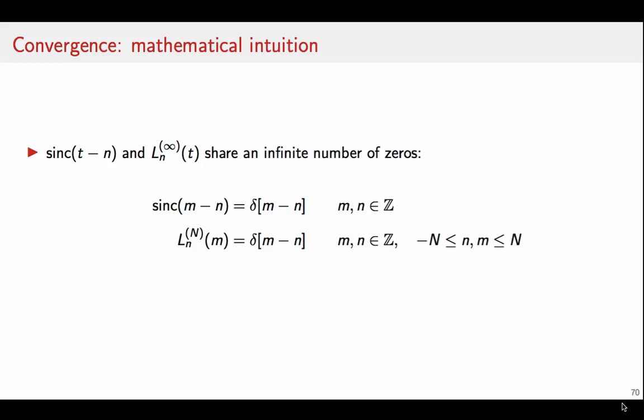One very non-rigorous way to develop a mathematical intuition as to why this is plausible is the fact that sinc(t-n) and the infinite-degree Lagrange polynomial share an infinite number of zeros because they're both equal to zero for all integer values of the argument. Since polynomials that share the same zeros are identical, by some sort of a hand-wavy extrapolation, we can say the sinc and the infinite-degree Lagrange polynomials are the same.